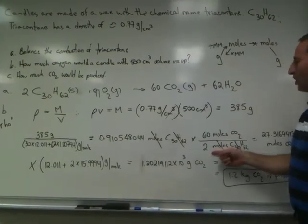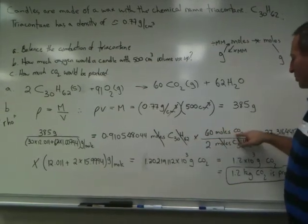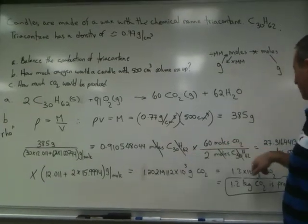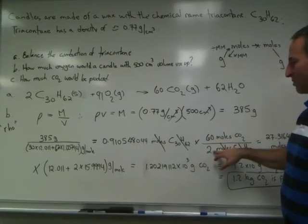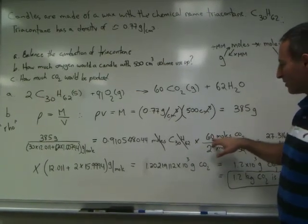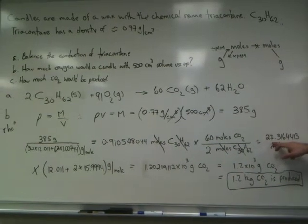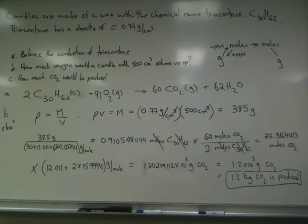So we're going to put 2 on the bottom because we want to cancel moles of triacontane. 60 moles of CO2 appear for every two moles of triacontane burned. We can cancel these two quantities. And 60 to 2 is the same as 30. So we're multiplying this number by 30. 30 times 0.9 gives us 27. So we have 27 moles of CO2 appearing.